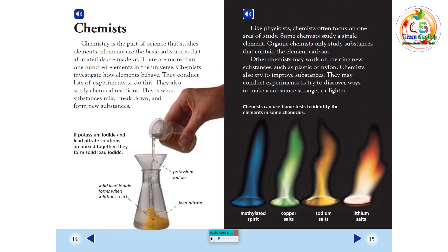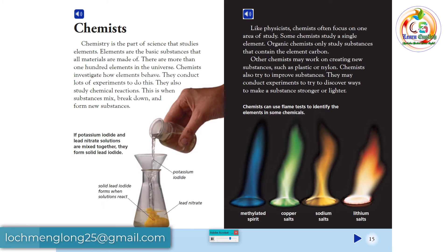Chemistry is the part of science that studies elements. Elements are the basic substances that all materials are made of. There are more than 100 elements in the universe. Chemists investigate how elements behave. They conduct lots of experiments to do this. They also study chemical reactions. This is when substances mix, break down, and form new substances.